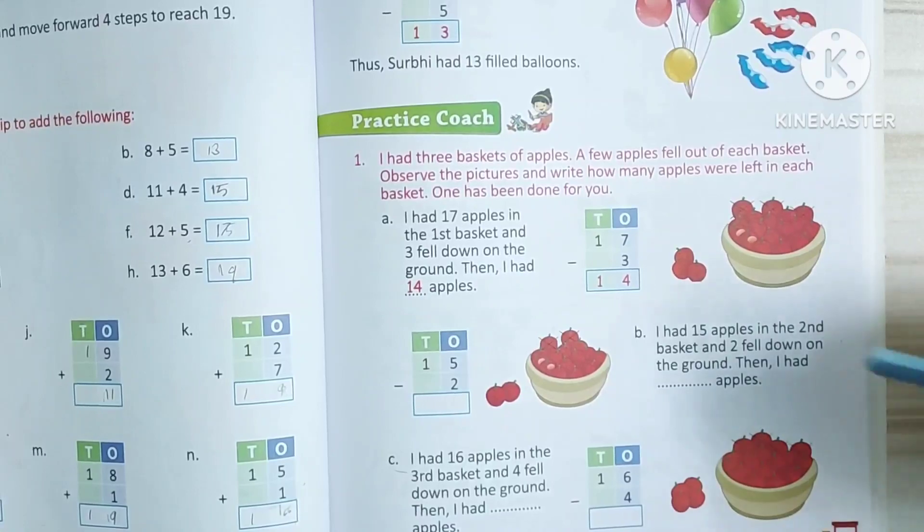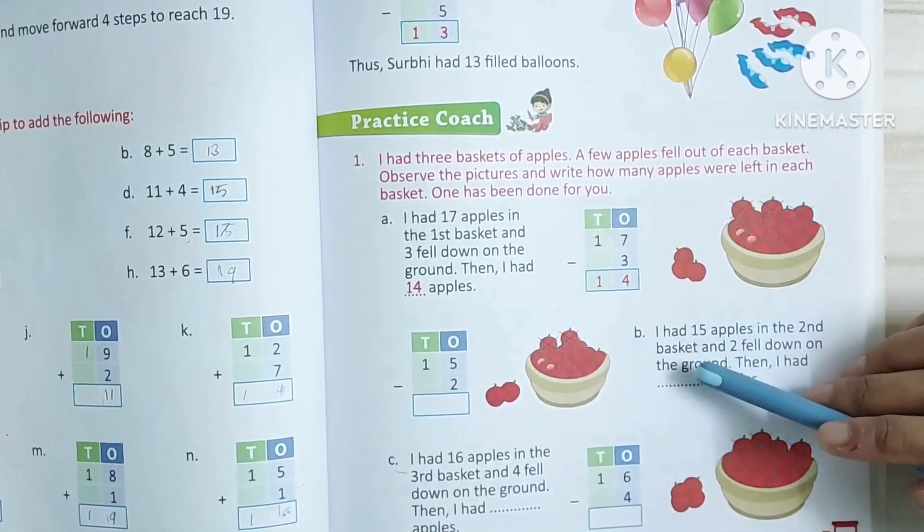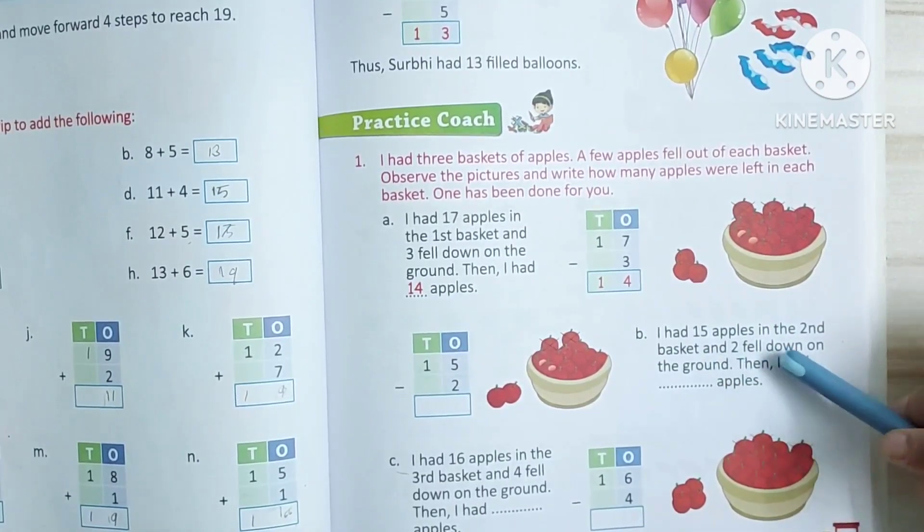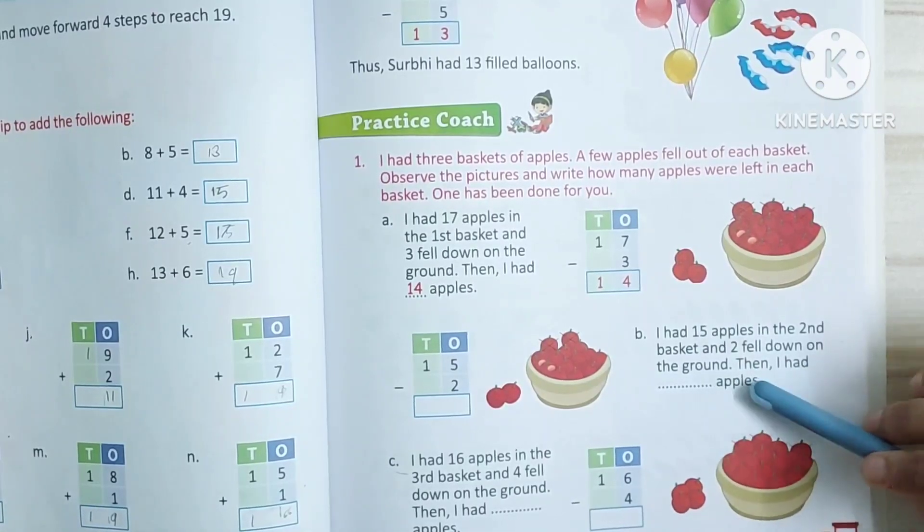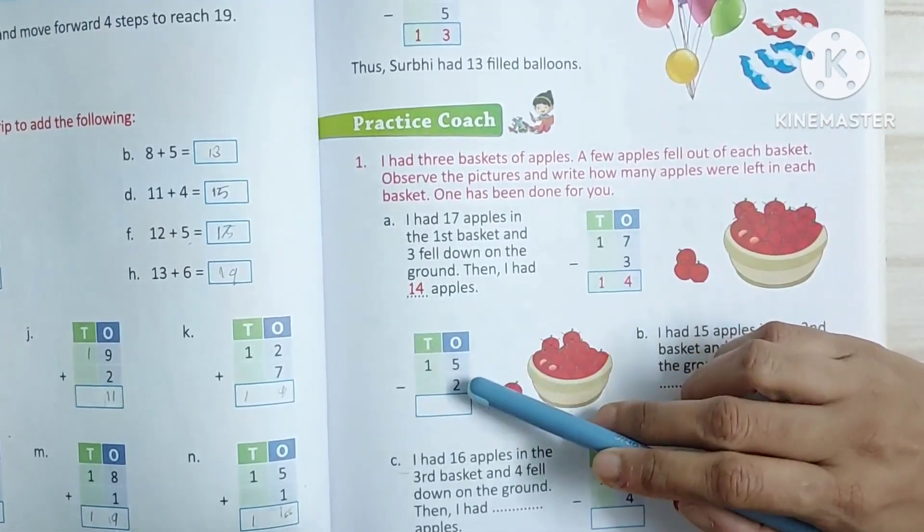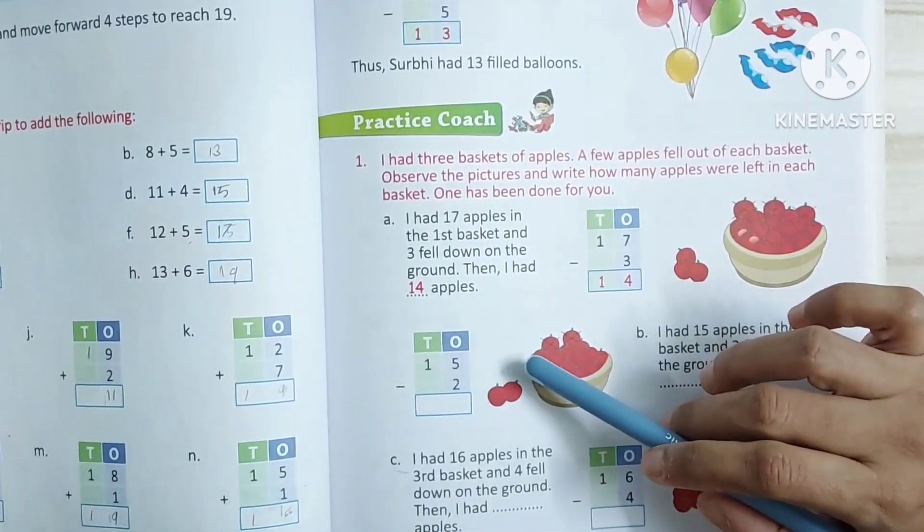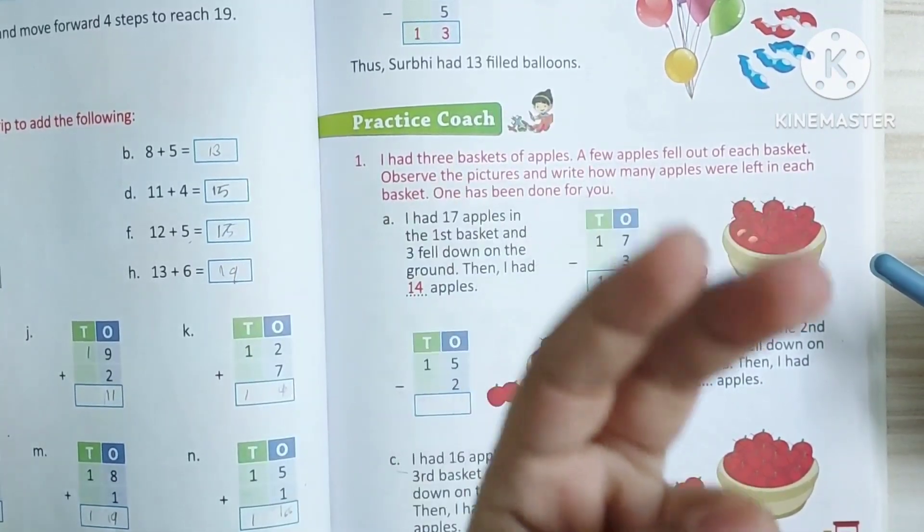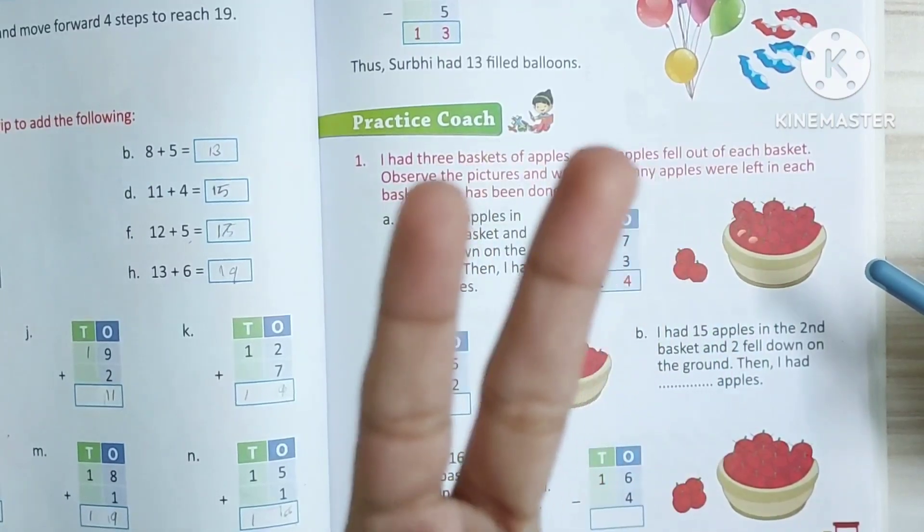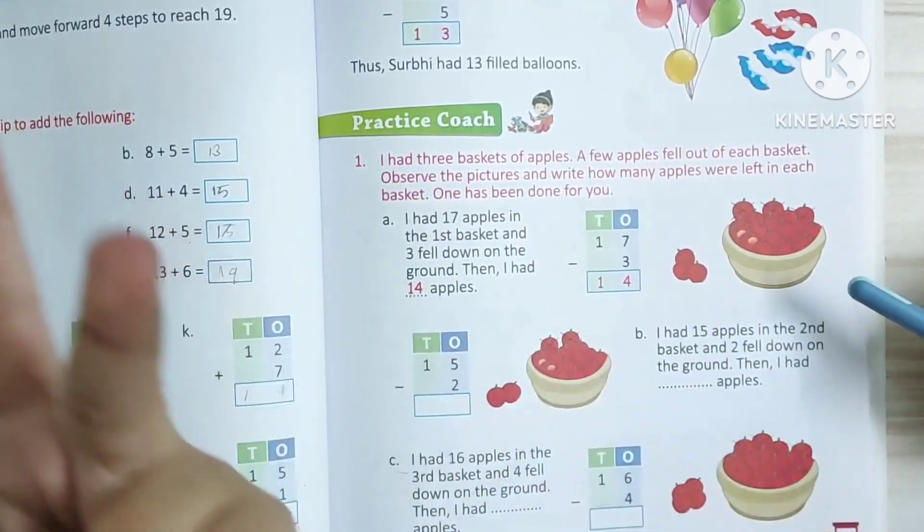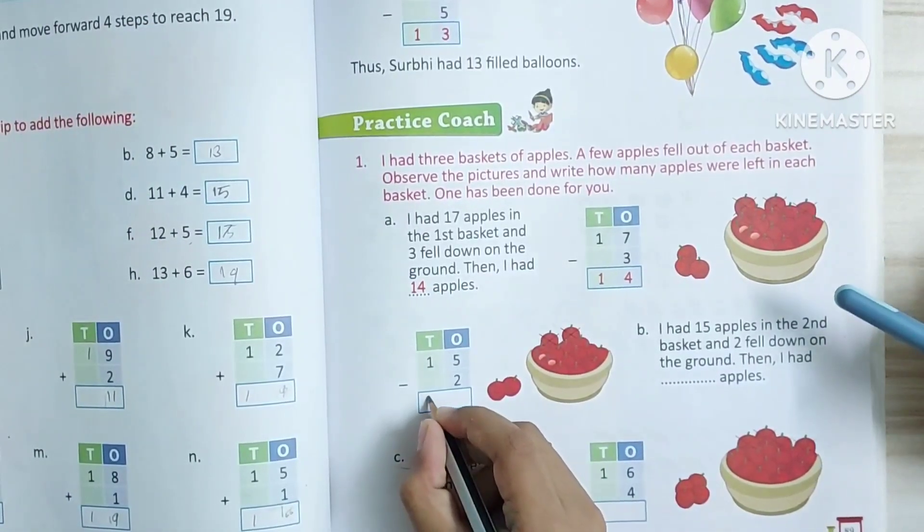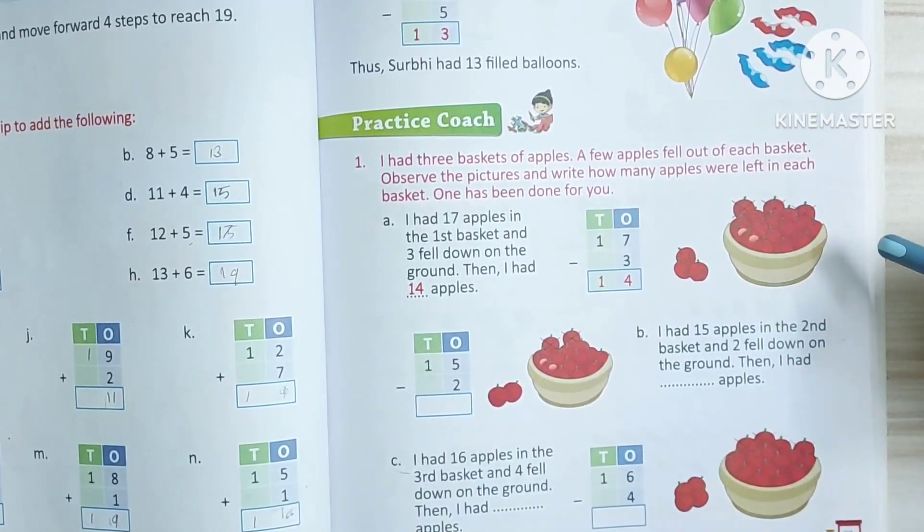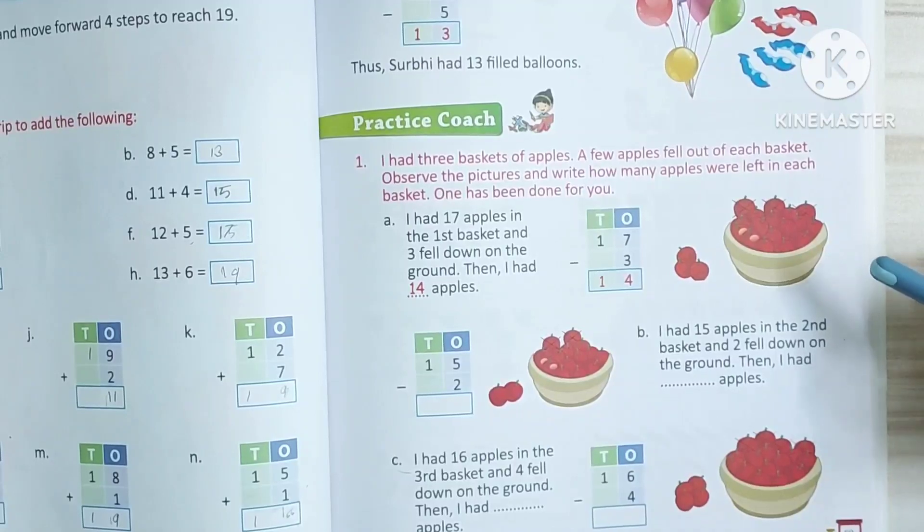So next, second one. I had 15 apples in the second basket and two fell down on the ground. Then I had blank apples. So, 15 apples, two apples fell down. 15 minus 2? 15 in the mind, two in the finger. After 15, before 15, 14, 13.